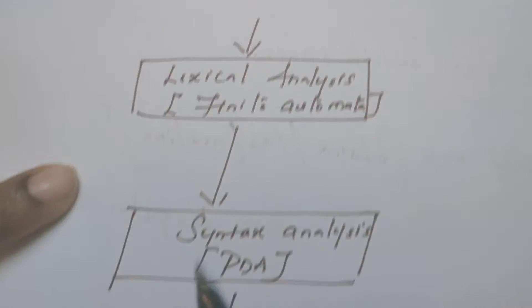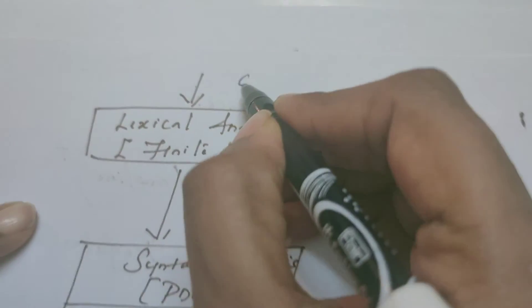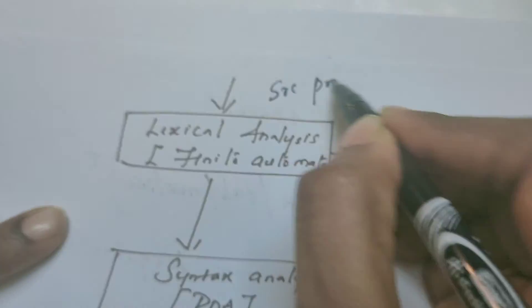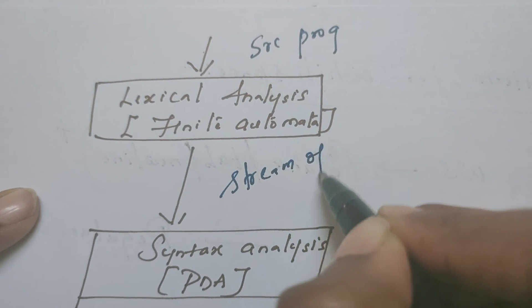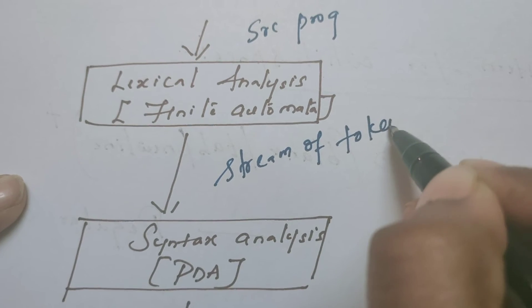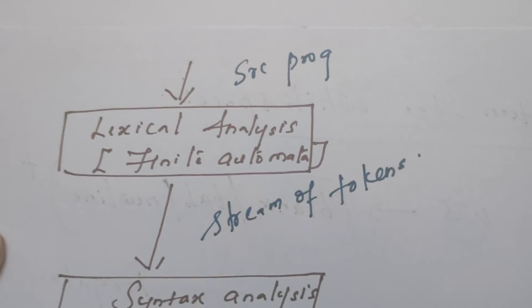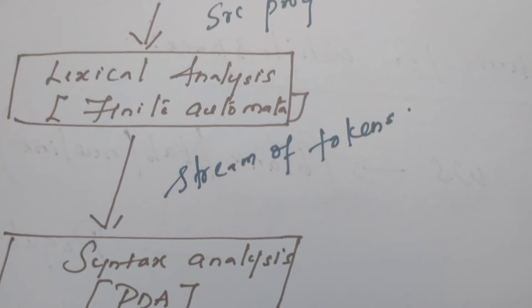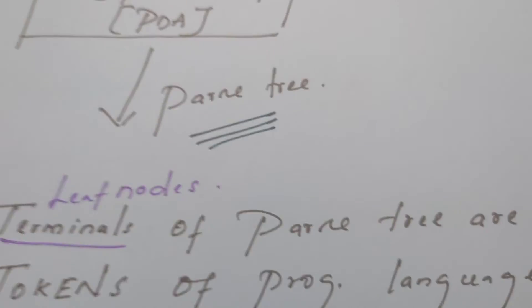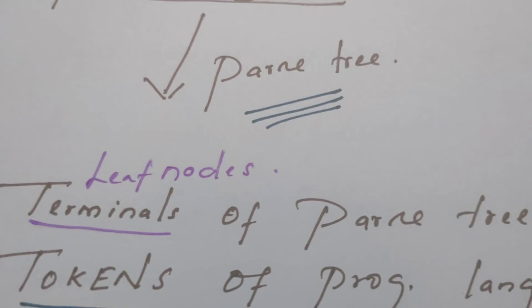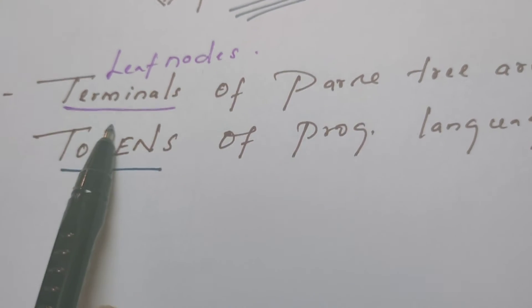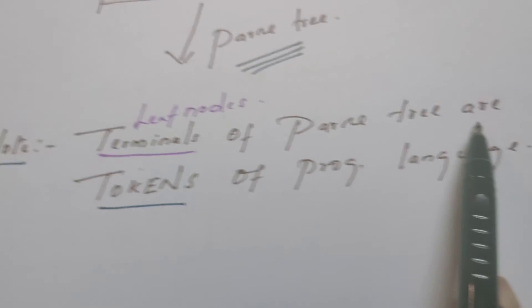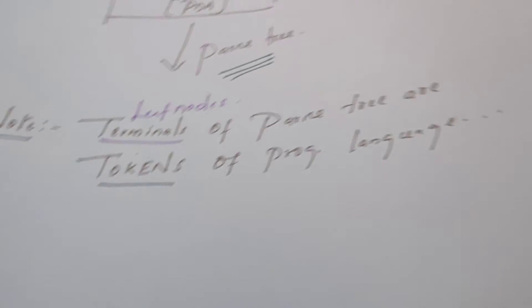Just to remind: lexical analysis takes the source program as input and produces a stream of tokens. That stream of tokens is the input to the syntax analysis phase, which produces a parse tree. We have constructed a parse tree for the given example, and the conclusion is that the leaf nodes are terminals and the tokens of the programming language.